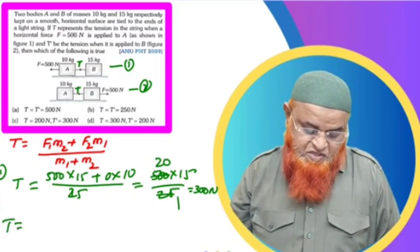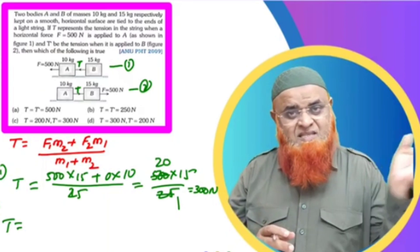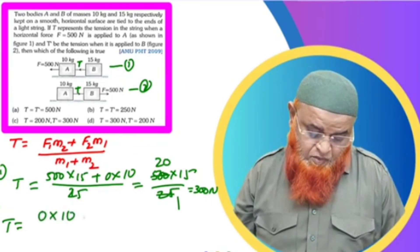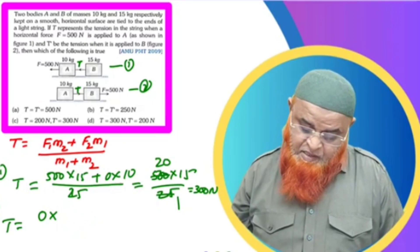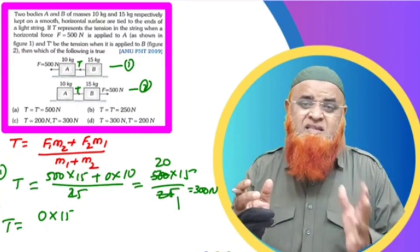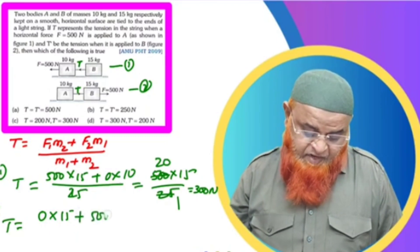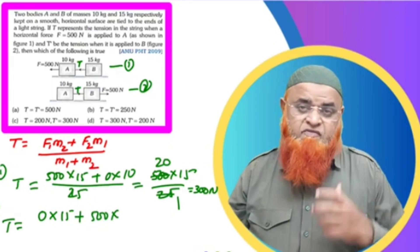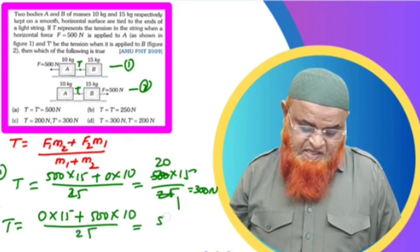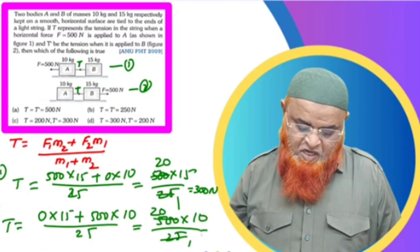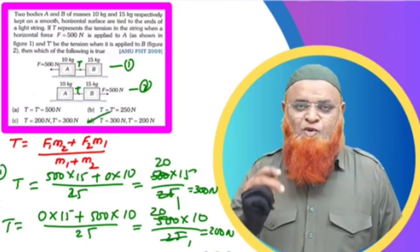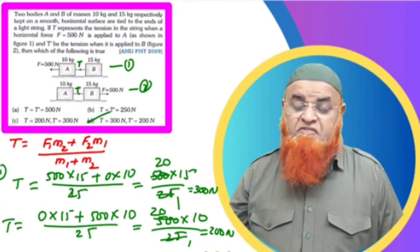In Case 2, the 500 N force acts from the other side with no force on the opposite side. T = (0 × 15 + 500 × 10) / 25 = 5000/25 = 200 newtons. So the answers are 300 N and 200 N, making the fourth option the correct answer.